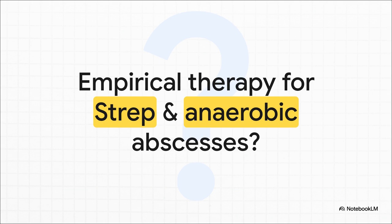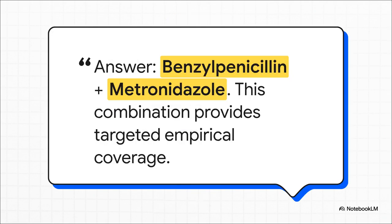Next question — this one is all about your first-line drug choice. You suspect the most common culprits are at play. What's the go-to antibiotic combination you're going to start with? The correct answer is benzylpenicillin plus metronidazole. This combination gives you excellent targeted coverage for the most likely suspects — the strep and the anaerobes. You would only bring in a drug like flucloxacillin if your clinical suspicion for Staph aureus was particularly high. The goal is targeted, intelligent coverage, not just throwing the kitchen sink at the patient.